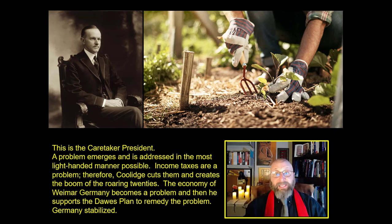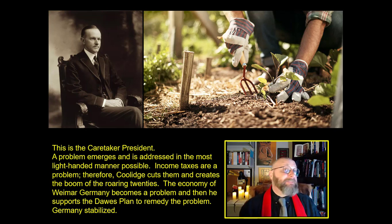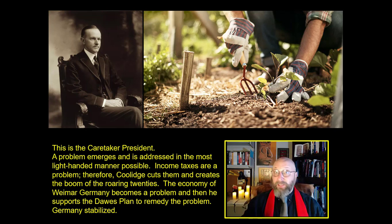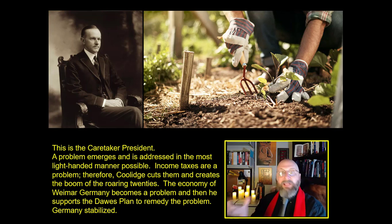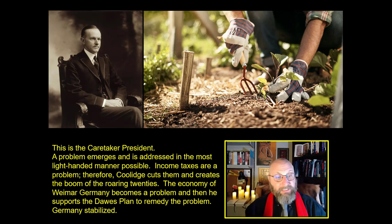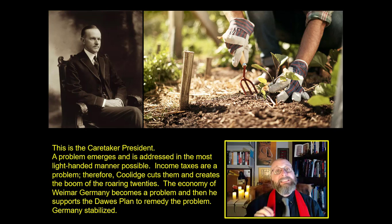This is Calvin Coolidge as the caretaker president. He's just a gardener, taking care of a garden that somebody else planned. A problem emerges and it is addressed in the most light-handed manner possible. Income taxes are a problem — Coolidge doesn't uproot them, he just cuts them to an absolute minimum, creating the booming economy of the Roaring Twenties. The Weimar Germany economy is a huge problem — he trims it back with the Dawes Plan to stabilize Germany. He's just a caretaker, taking care of a garden someone else planted.